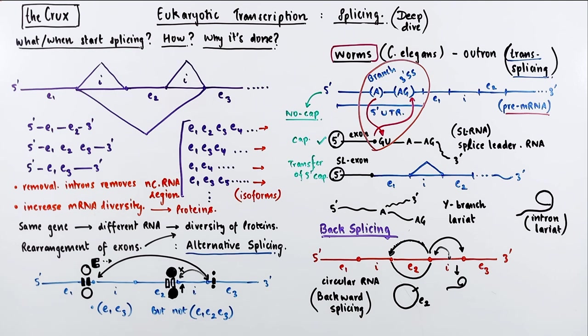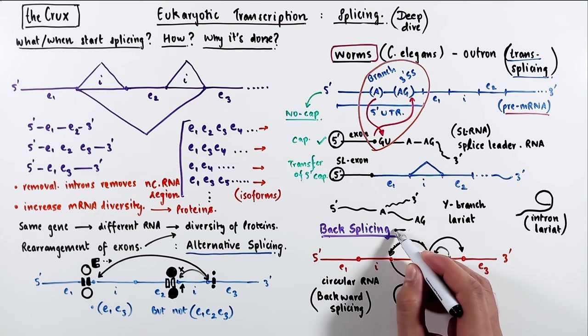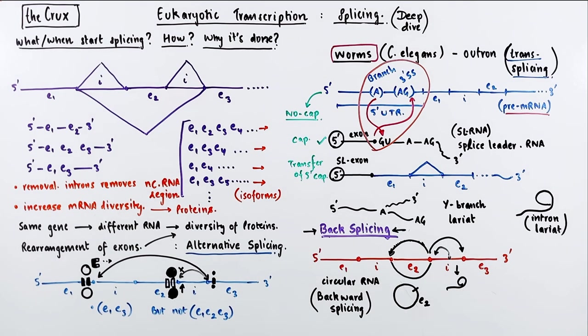In normal cases, the first intron is co-transcriptionally removed before the RNA polymerase gets to the second exon. So such events of back-splicing are rare. But back-splicing does happen in normal conditions as well. And that's pretty much it for this video.